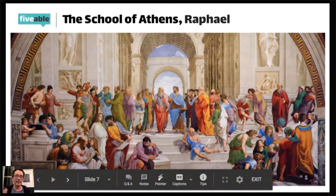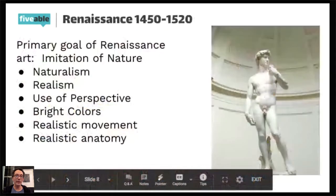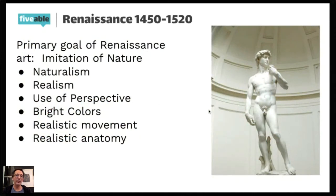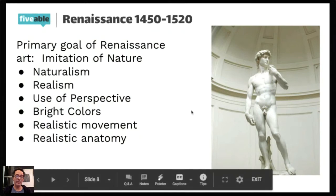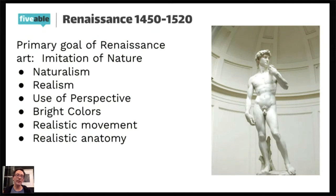Renaissance is really, really beautiful art. Its key characteristics include realism — for the first time, people look anatomically correct. Also perspective, bright colors, and realistic movements and anatomy. The human anatomy in these paintings looks far more real than in medieval art. Artists like Leonardo da Vinci actually excavated bodies to study how they physically looked, to really get the accuracy.